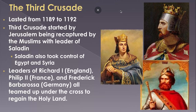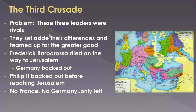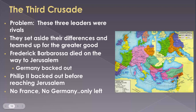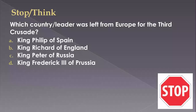Getting to the Middle East was itself a problem. Germany dropped out right away because Frederick Barbarossa died on the boat ride to Jerusalem, so the German soldiers had to turn back. Philip the Second backed out even before reaching the destination — nobody really knows why — and simply turned around.